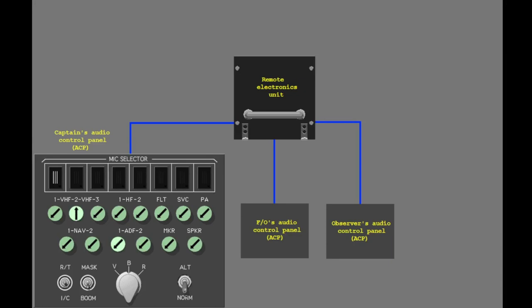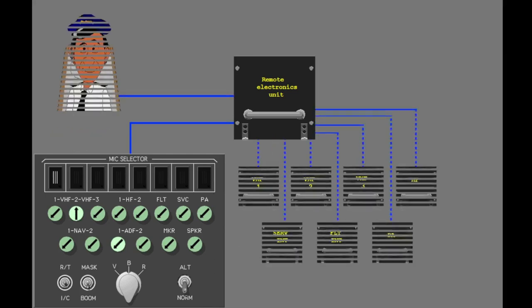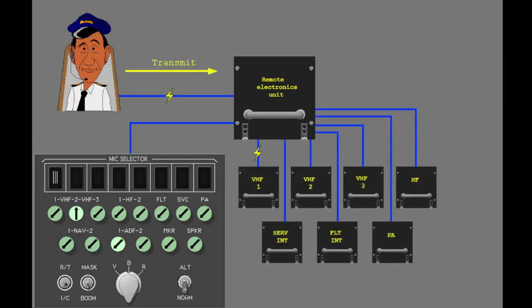This example uses the captain's audio system. The first officer's and observer's systems operate the same way. Normally, when the captain transmits, audio signals from the microphone go through the remote electronics unit to the related radio or system. When the captain receives, audio signals from the radios and other systems go through the remote electronics unit to the captain's headset or speaker.